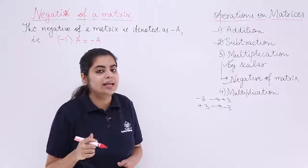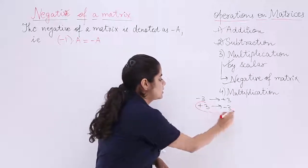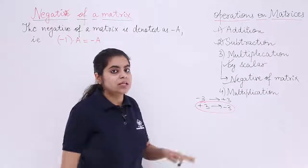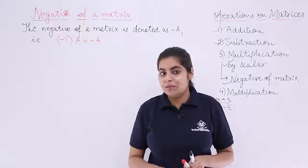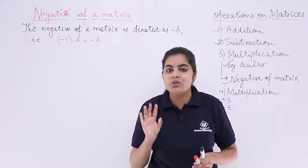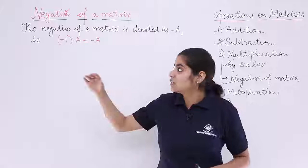Students usually think that negative of a matrix means only this and not the above case. Negative of a matrix simply means multiply each element of that matrix by minus 1. That you have to keep in mind. It is written over here also.